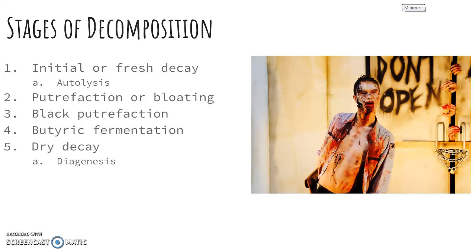The first stage is initial or fresh decay, also called autolysis. Then you have putrefaction or bloating. Third is black putrefaction. Fourth is butyric fermentation, and the fifth stage is dry decay or diagenesis.